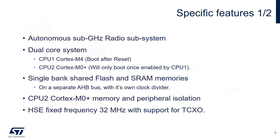It is important to remember that the radio system is autonomous. We have a dual-core system and the flash and SRAM are shared between the two cores. For Cortex-M0, as a secure engine and secure core, we can enable memory and peripheral isolation. Regarding the HSE clock, the frequency is fixed at 32 MHz, and this oscillator also supports TCXO — a temperature-compensated oscillator. The main reason for that is the support of Sigfox modulation.